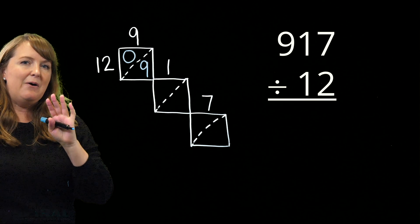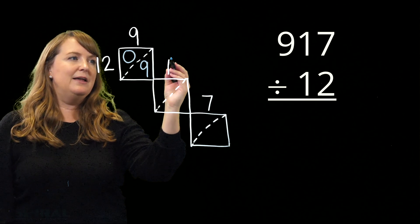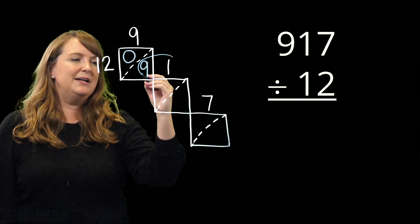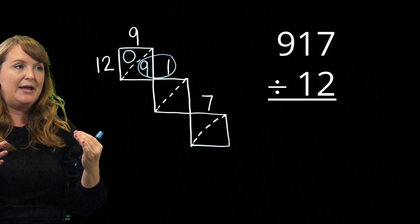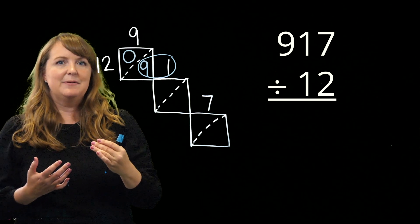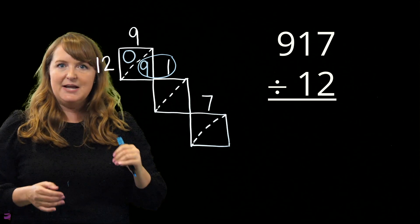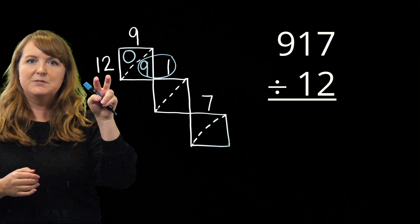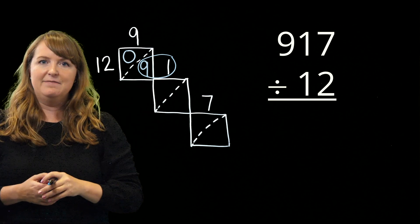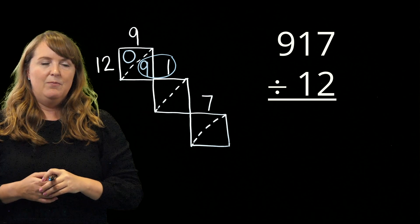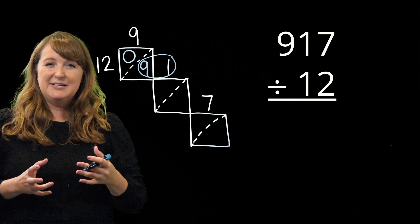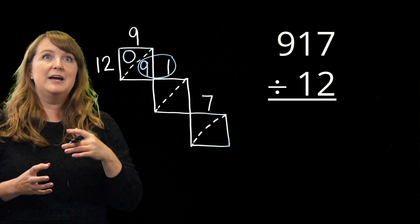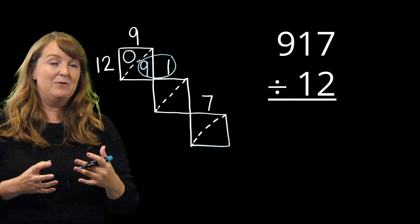So now I'm going to take that 9 and combine it with the 1. And I sometimes like to circle this to say, oh, now I'm focused on 91. Now I'm going to ask myself to fill in this next square. How many groups of 12 can I make if I have 91? Well, let's see. I know that 12 times 6 is 72. 12 times 7 is 84.